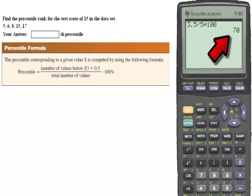So the number 15 in this data set is the 70th percentile.